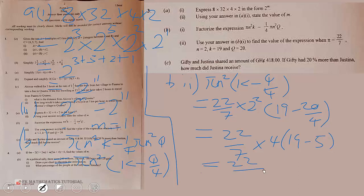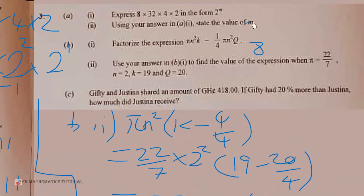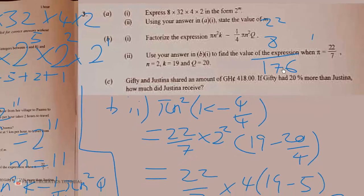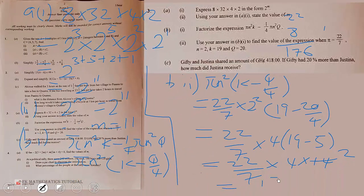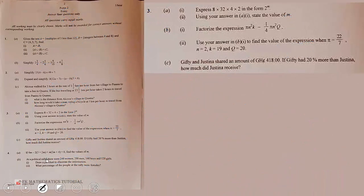So we have 22 over 7 times 4 times (19 minus 5), which gives 22 over 7 times 4 times 14. 7 goes into 14 two times, so we have 8 times 22. 8 times 22 equals 176. Therefore the answer is 176.